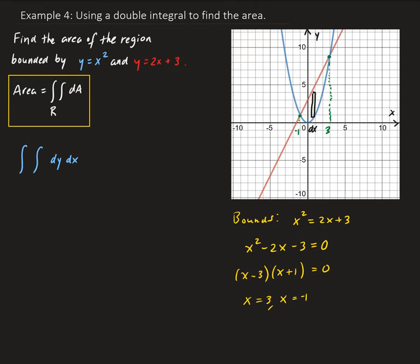Using the formula shown in the yellow box, for the inner bounds we have 2x plus 3 on top and x squared on the bottom, so the inner integral goes from x squared to 2x plus 3. For the outer bounds, since we're using a vertical representative piece, this goes from negative 1 to 3.